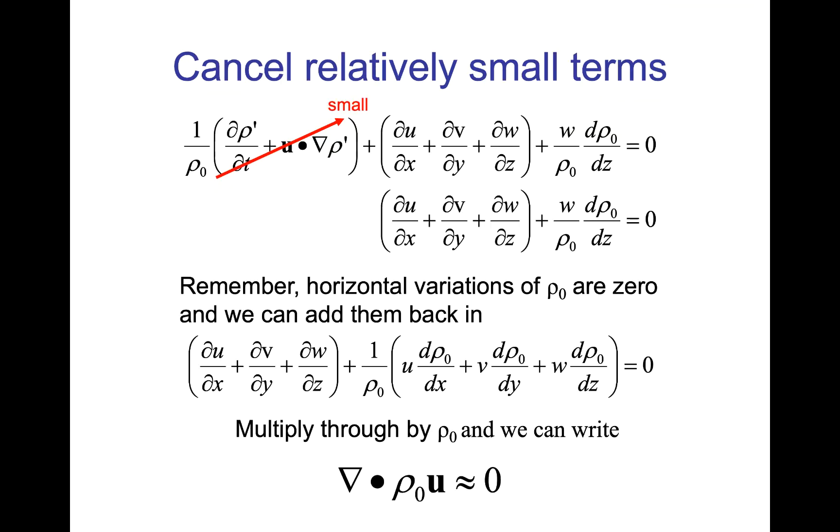What we're going to do now is to cancel what we would call the relatively small terms. That's then going to leave us with this divergence here of the velocity plus this w times dρ₀/dz divided by ρ₀ equal to zero. Remember that the horizontal variations of ρ₀ are zero, and hence we can essentially add these zeros back into the equation. This then gives us a form where we have ∂u/∂x here and u times ∂ρ₀/∂x here. Remember this was a zero, so we can add it back.